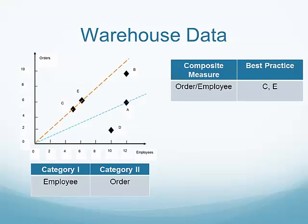And if you look at this picture, warehouse C and E are the best practices. All the other warehouses A, B, and D are not efficient. The composite measure is a ratio of orders by employee and represents the performance or efficiency of each warehouse.